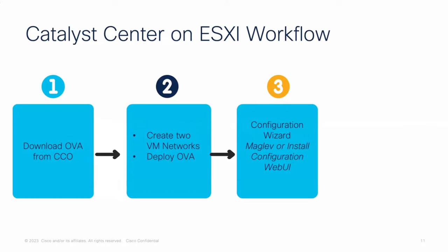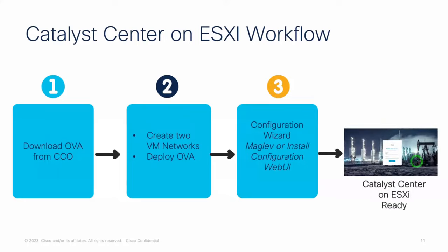Remember to have all the IP addressing for management and enterprise interfaces, default gateways, NTP, DNS, and proxy server if needed, ready before you proceed. After configuration, you will get into the Catalyst Center ESXi GUI. An important note: the first login uses a default username and password for admin, which we will review in the demo. After that, you will be required to create a new user, and the admin account will be deleted.